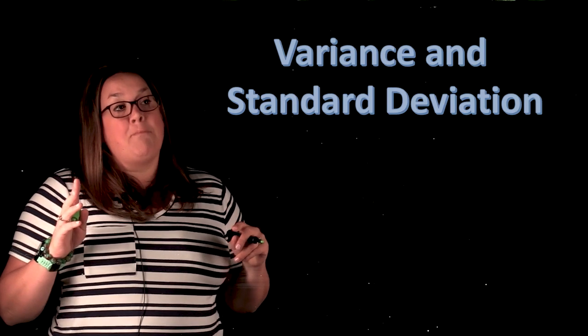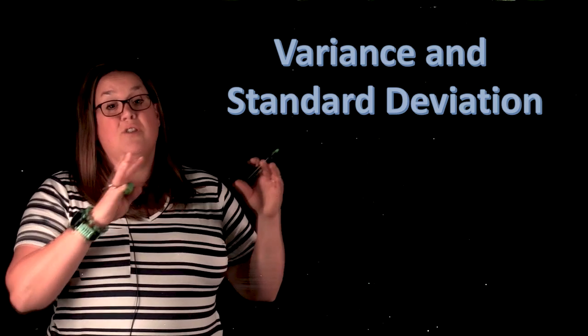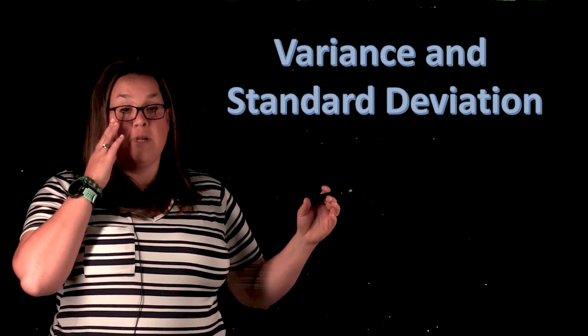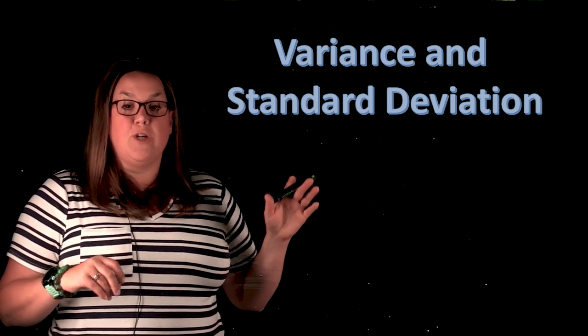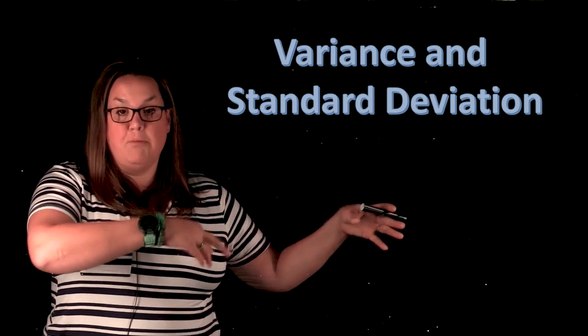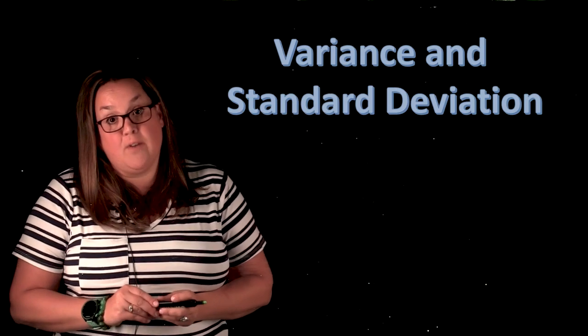When we talked about means, we had X bar and that formula actually can also be used for mu, which is the population mean. That is not the same case here. So variance and standard deviation has a unique formula for a sample versus a population. So what we're looking at today is specifically for a sample.